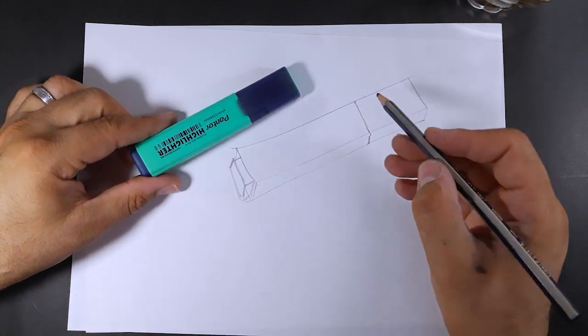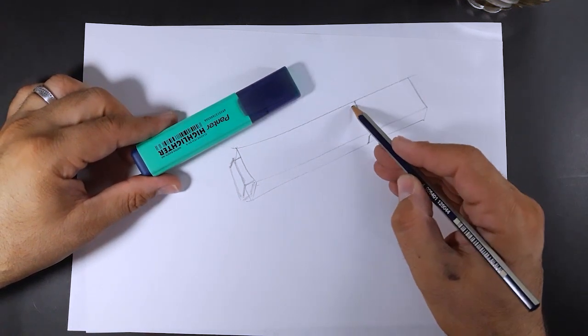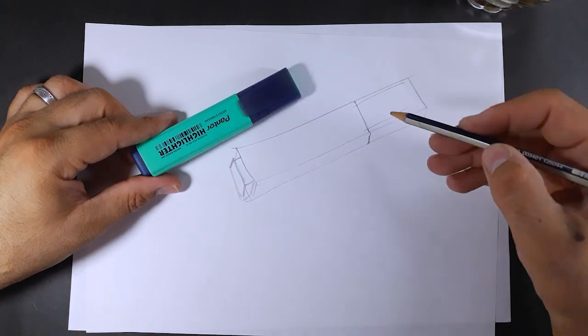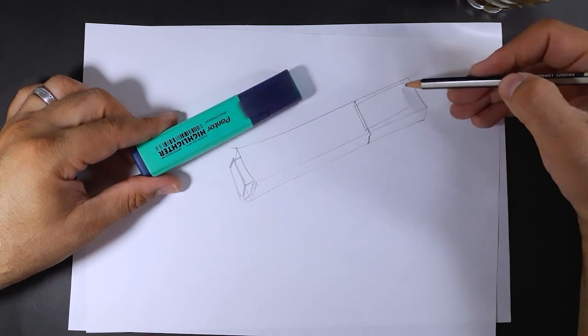We have to draw another small cube behind the marker. The lines are only in three directions: X, Y, Z.